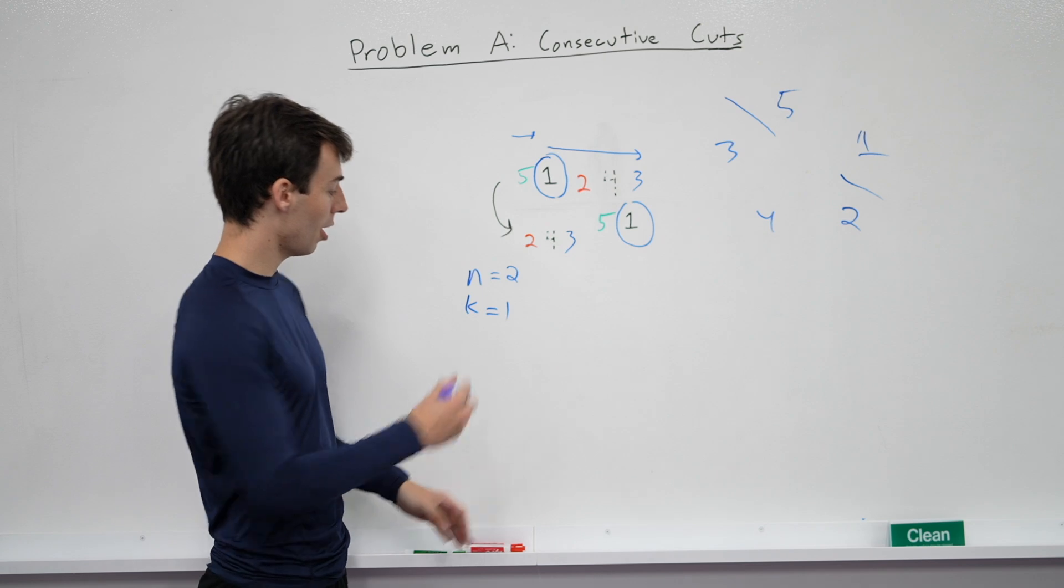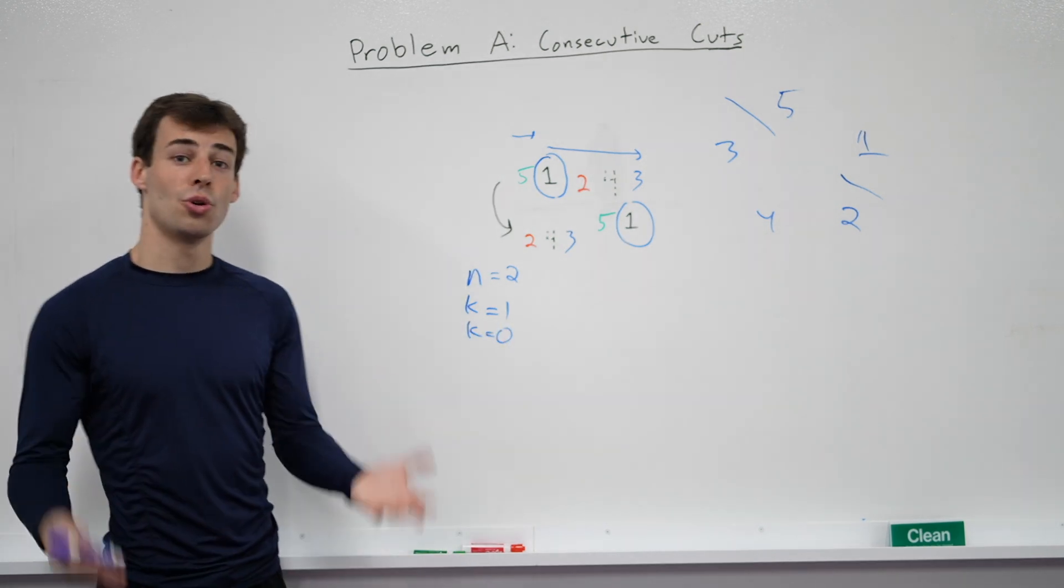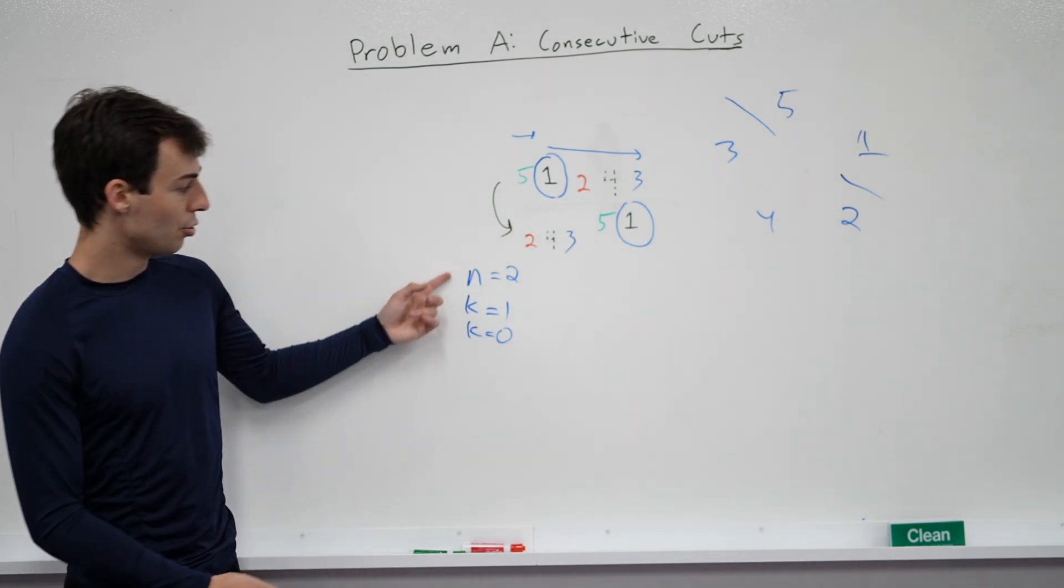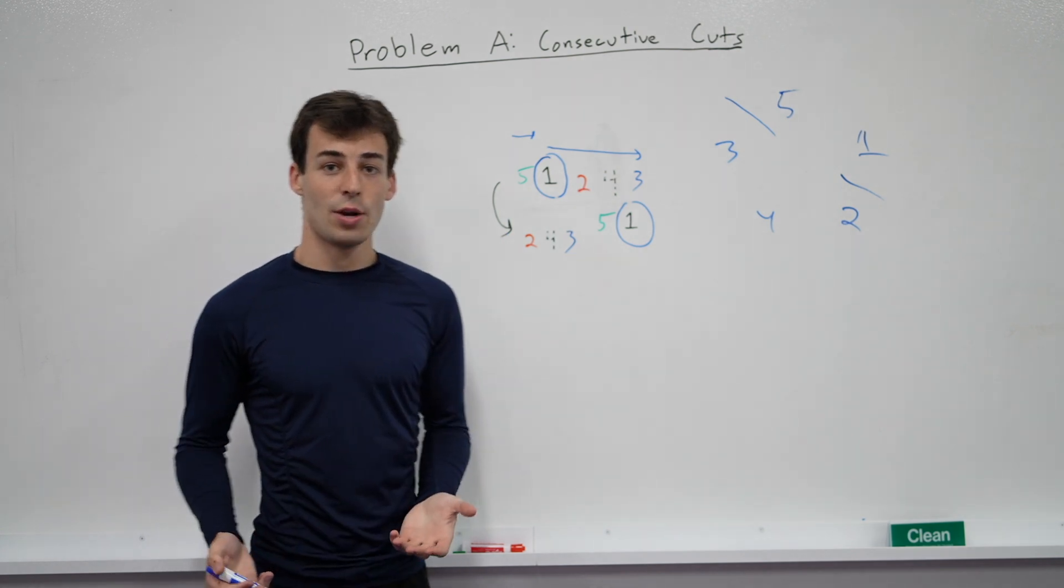The other case is for k equals 0. If you're not allowed to make any cuts, then the two arrays have to match right away. So these are the things you have to watch out for. They can be a little tricky. So that's the solution to A1.